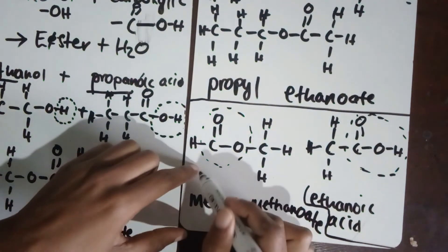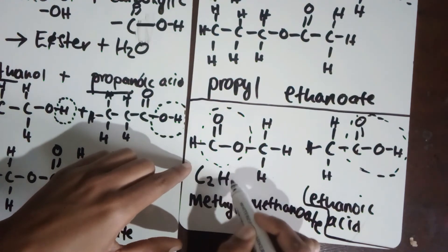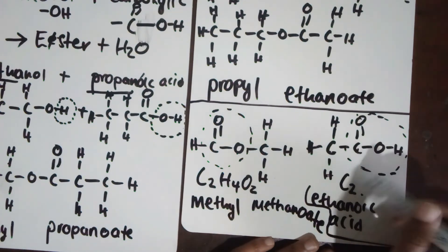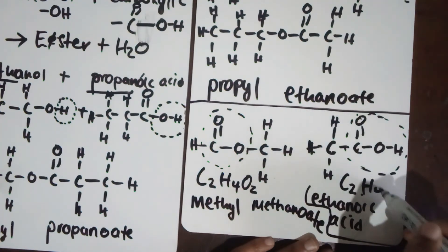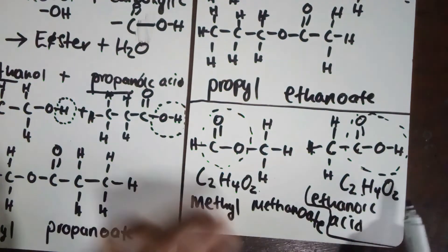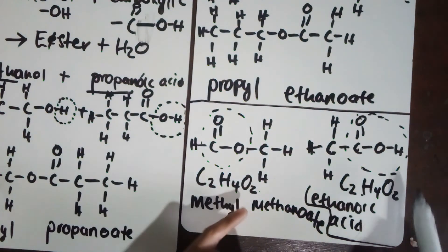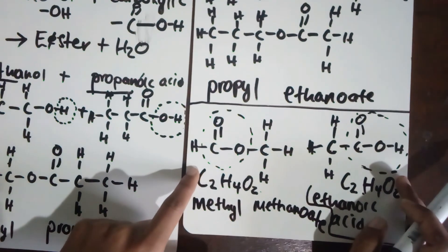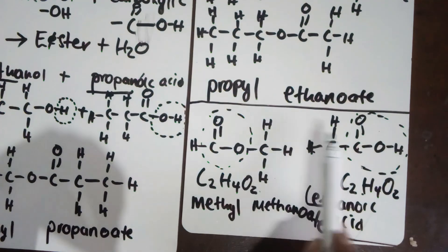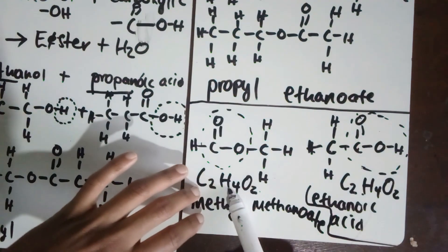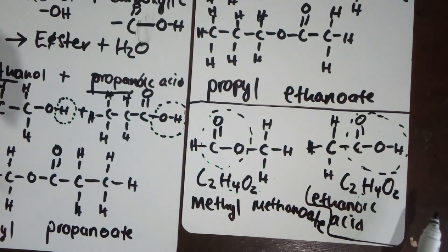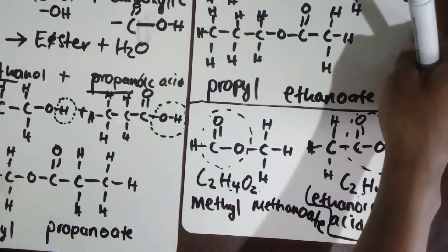Now let's write the molecular formula. For ethanoic acid: two carbons, four hydrogens, two oxygens — C₂H₄O₂. For methyl methanoate: also two carbons, four hydrogens, two oxygens — C₂H₄O₂. Notice that the molecular formula of both compounds is the same, yet the functional groups are different — one is an ester and one is a carboxylic acid. We've already spoken about isomers, so we define molecules with the same molecular formula but different functional groups as functional isomers.